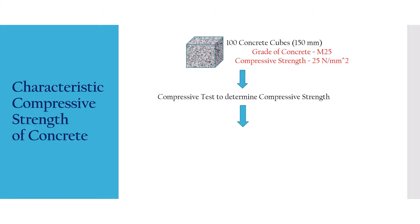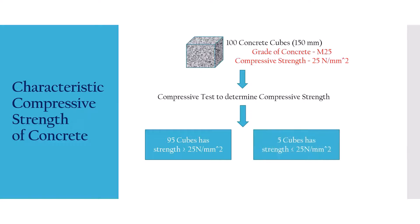Out of this test, 95 cubes showed a strength value greater than 25 N per mm², that is greater than the grade we have made. Out of 100, 5 cubes had a strength less than 25 N per mm². So as per the definition, it is clear that out of 100, 5% of the test results showed a value lesser than the grade of the concrete.